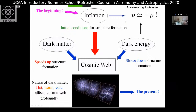Dark energy and inflation both have one thing in common: the pressure driving these two components is negative. This is a very startling and exotic possibility because the pressure in your pressure cooker at home or in the sun is positive — you don't encounter negative pressure in everyday life. Nevertheless, it appears the universe has exotic components with strong negative pressure.